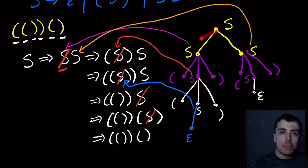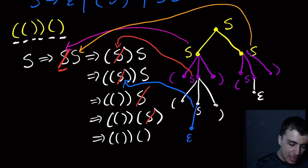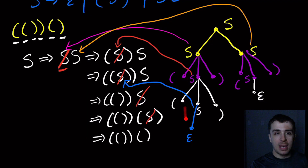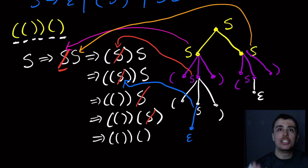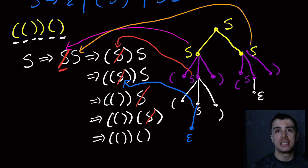This is now a parse tree for this derivation. Remember, it's a derivation if we start with the start variable and end with a string composed only of terminals or the empty string, which is what we get here. How do we actually read this parse tree? We read the leaves from left to right. The leftmost leaf is that node right there, then the next leftmost, then this one, continuing through to reconstruct the original string. We're just reading the leaves from left to right and can reconstruct the original string using this representation.